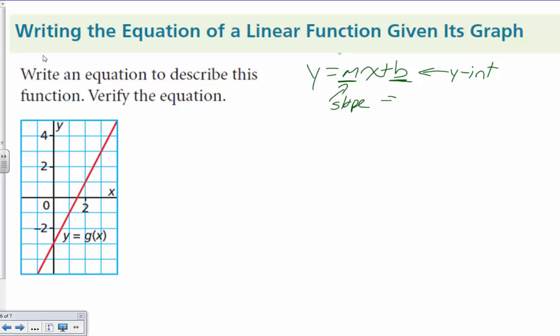To find the slope, we need two points for using rise over run.